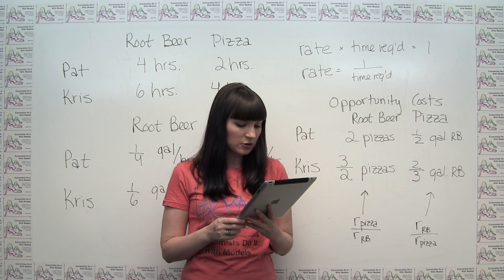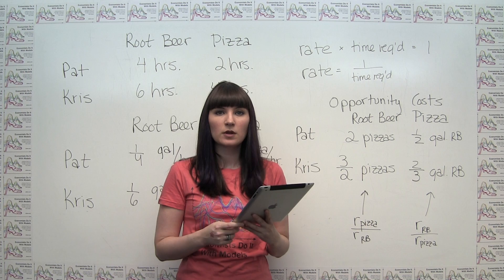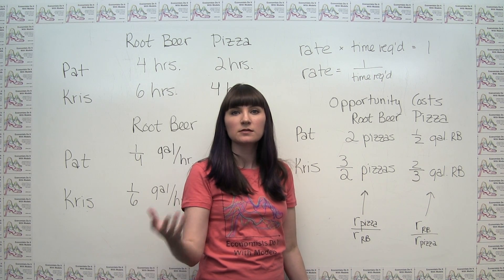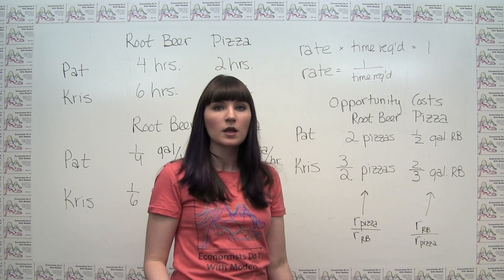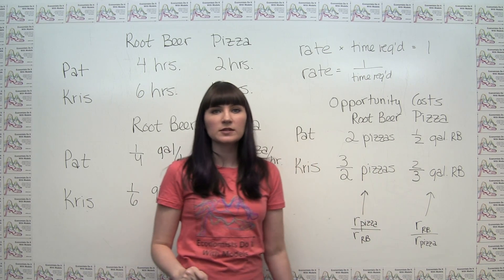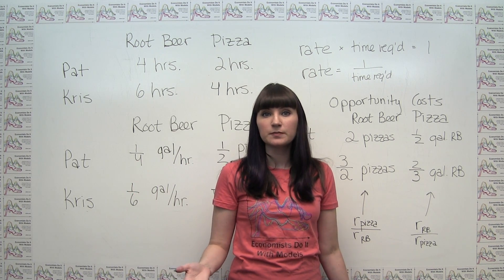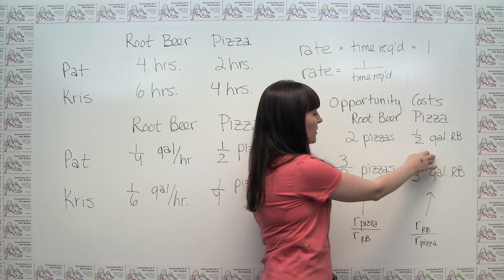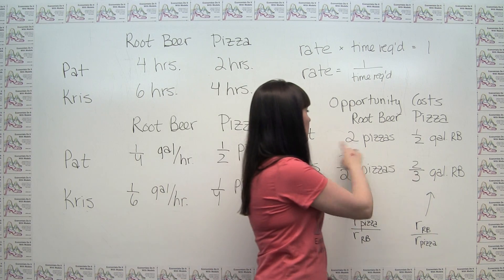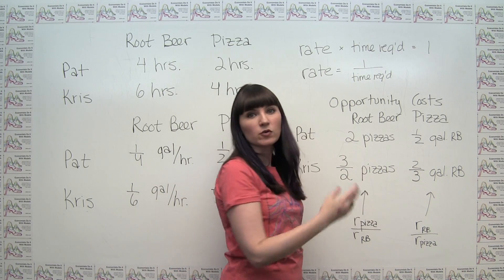Part B asks: if Pat and Chris trade foods with each other, who will trade away pizza in exchange for root beer? In efficient voluntary trade, each party produces and trades away the good in which they have a comparative advantage. Pat has the comparative advantage in pizza and Chris has the comparative advantage in root beer, so Pat will trade away pizza for root beer, and Chris will trade away root beer for pizza.